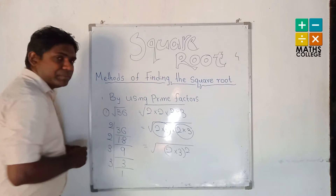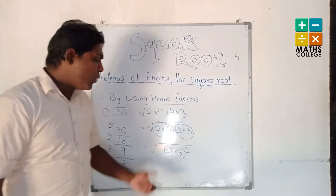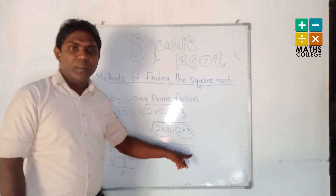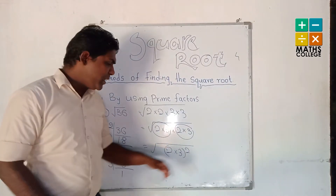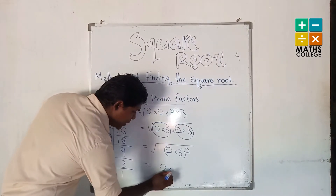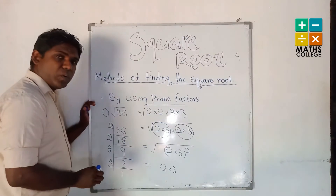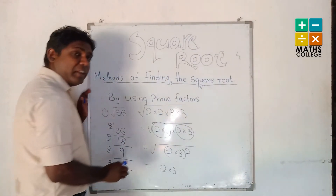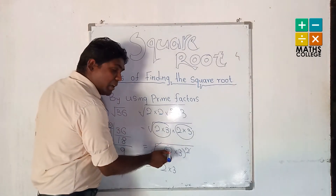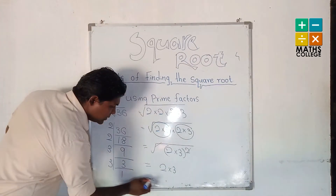According to our first video clip, the square root cancels with the square power, leaving 2 × 3. The answer is 6. So the square root of 36 is 6.